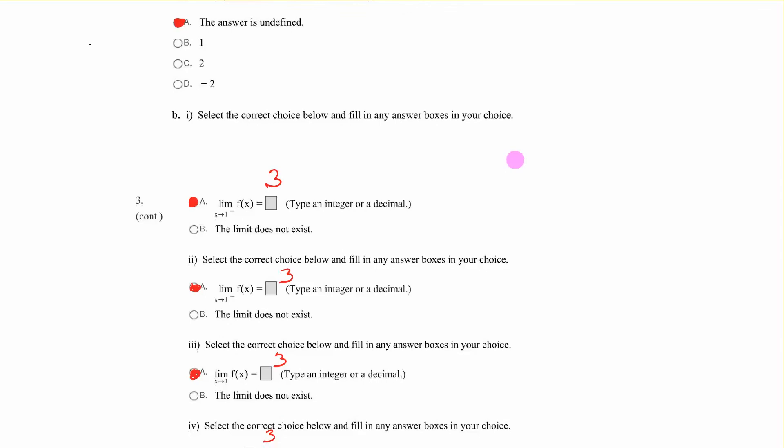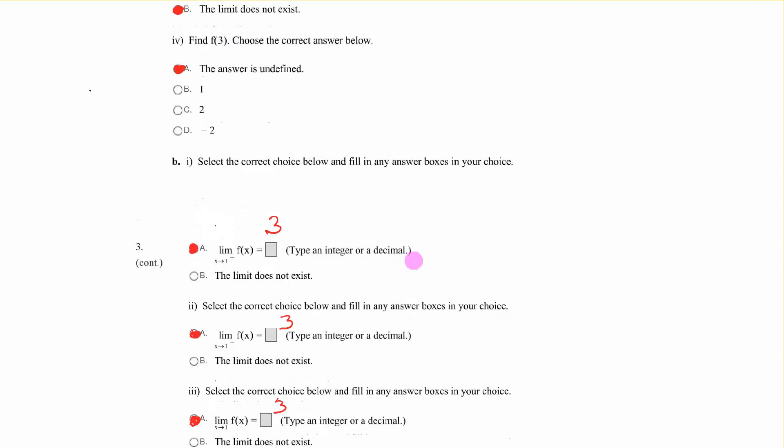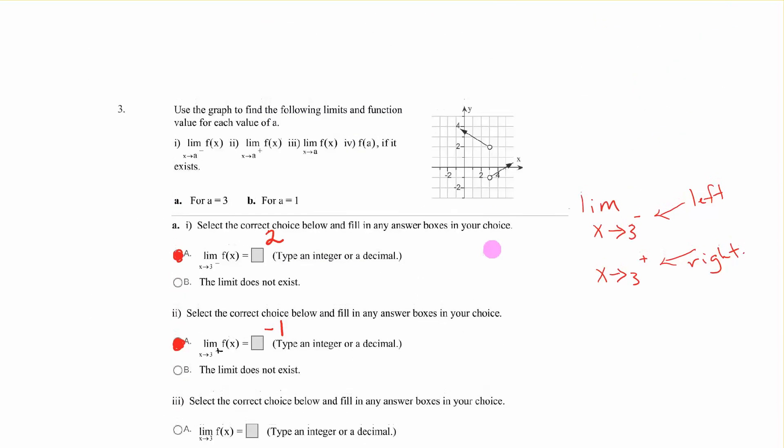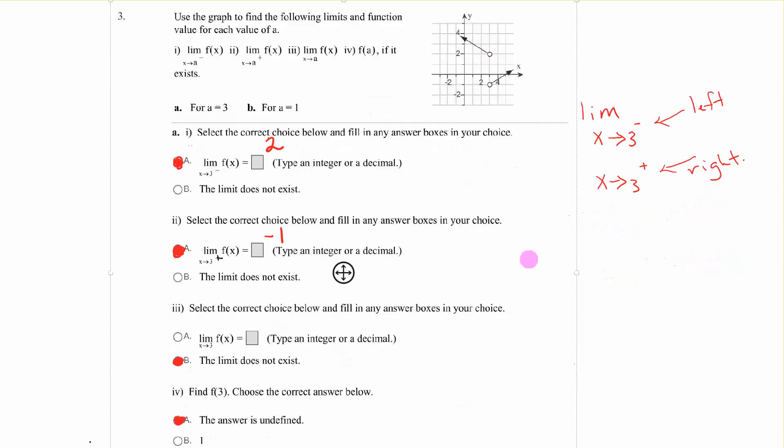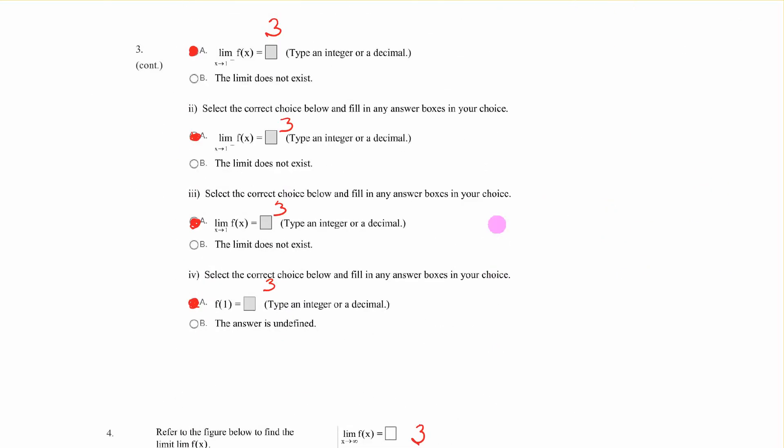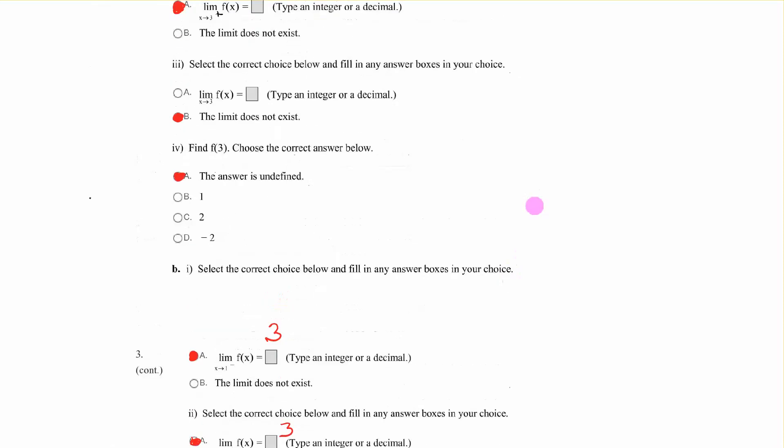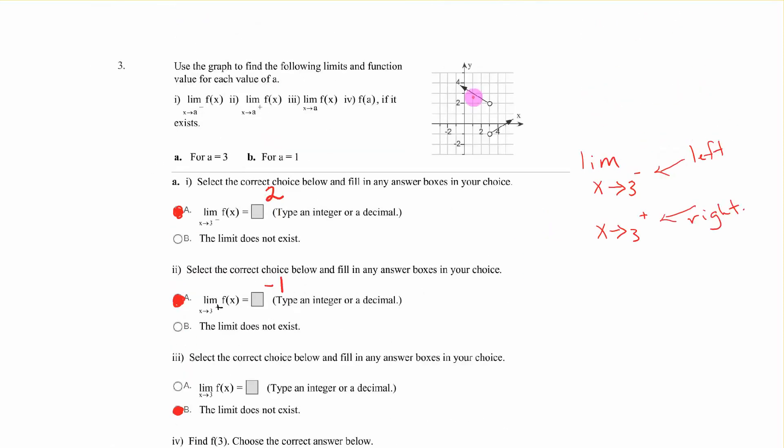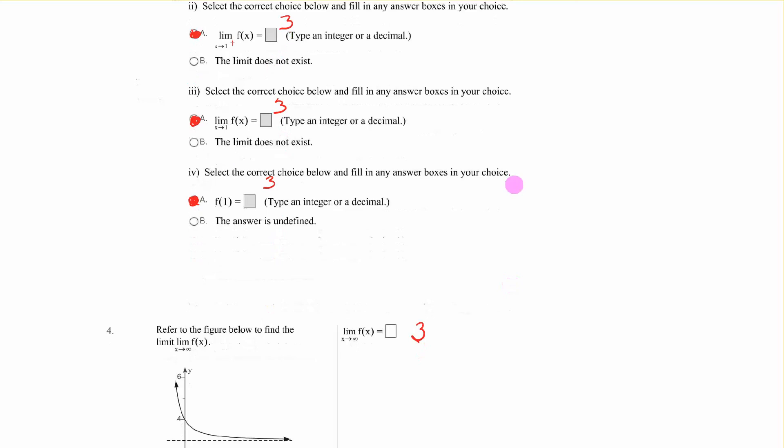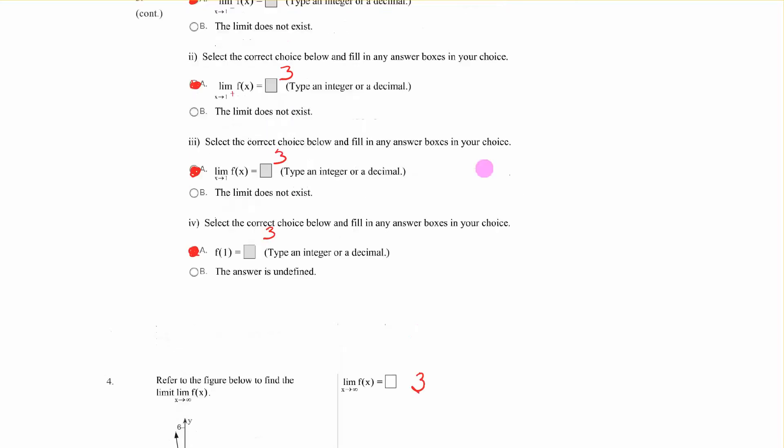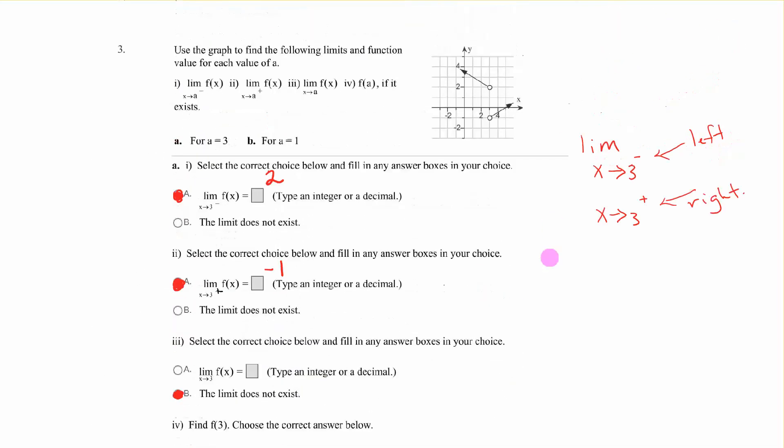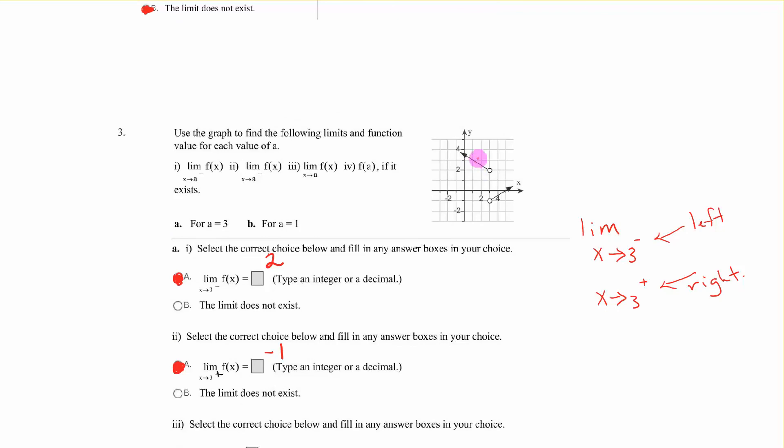Okay, we're still working on that. The limit as x approaches is 1 from the left. 1 from the left. That is 3. And 1 from, I think that's supposed to be a plus. 1 from the right is also 3, because we're here. And then in general, it is 3. And then it says, what's f of 1? I'm sorry that we have to go scrolling back. But f of 1 is also 3.